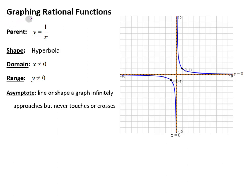Today we're talking about graphing rational functions. What makes a rational function? That's any time we have a variable in the denominator, specifically when we have some sort of polynomial in the top and bottom, but we need to specifically have at least one variable in the denominator.